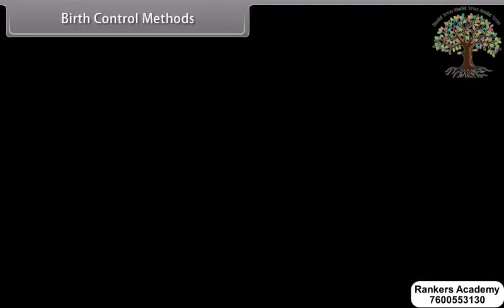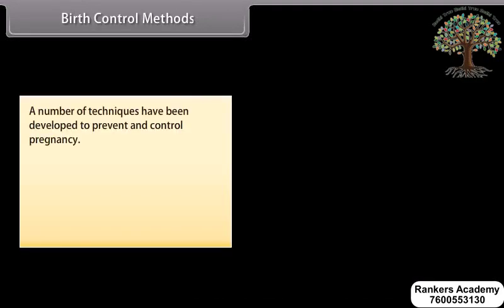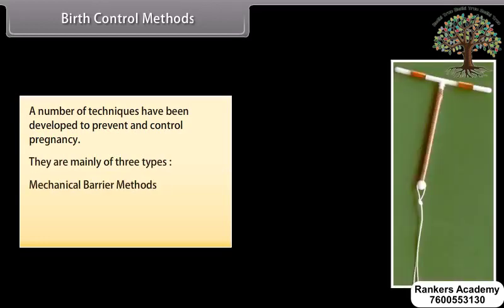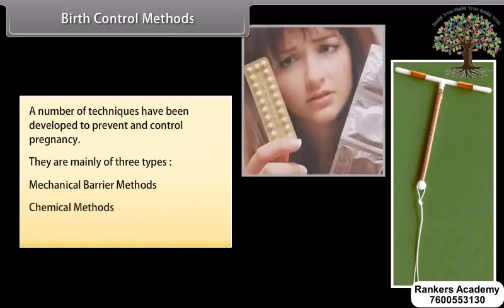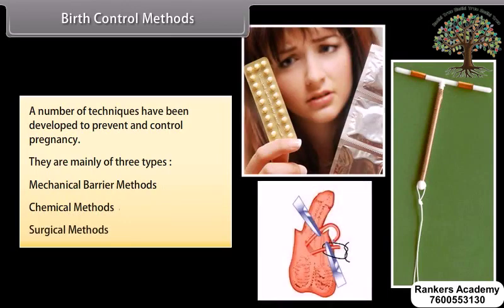A number of techniques have been developed to prevent and control pregnancy. They are mainly of three types: mechanical barrier methods, chemical methods, and surgical methods.